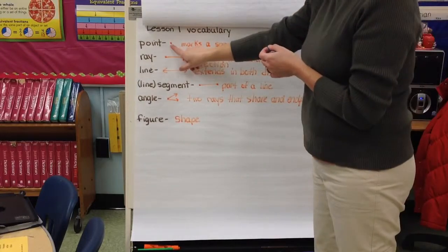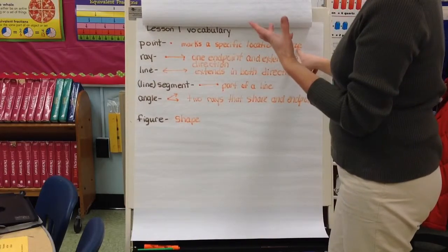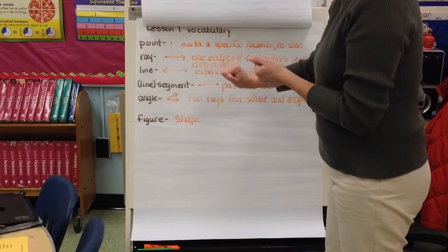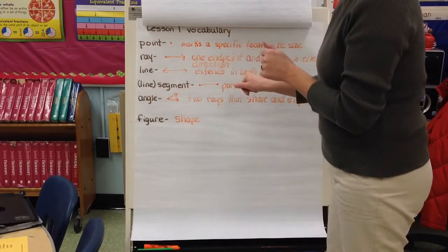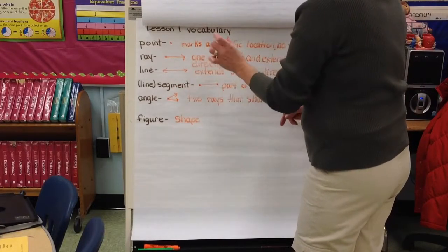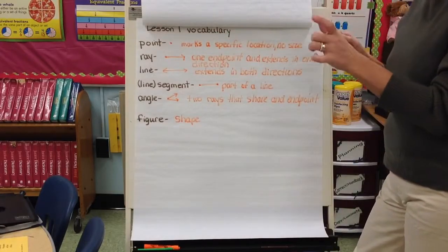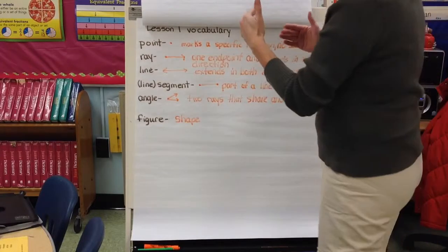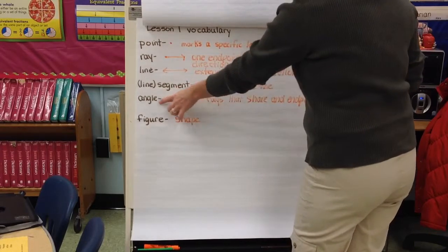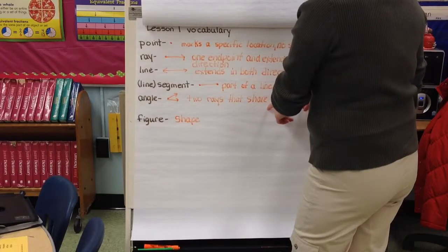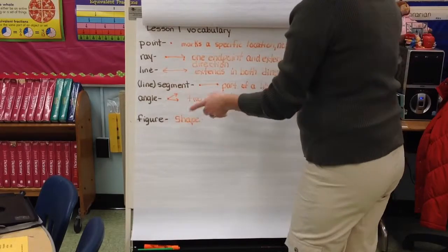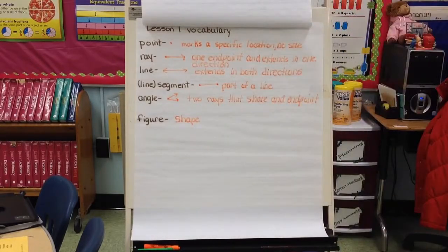A point, it marks a specific location. There's no size of the location. It's just a point. A ray has one end point, extends only in one direction. A line extends in both directions. It has arrows to show you. A line segment has two end points, and it's only part of a line. Because if you watch a segment of a movie or a TV show, you're only watching part of it. So a line segment is part of it. And you can either say line segment or just segment. An angle, it's where two rays that share an end point. So there's the end point, there's our two rays. And a figure is another word for shape.